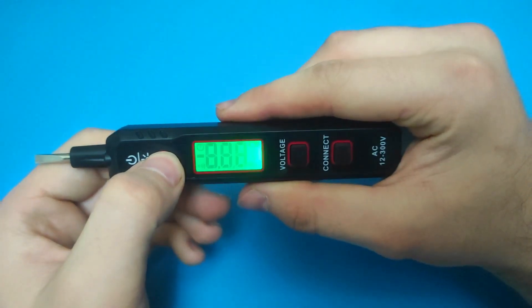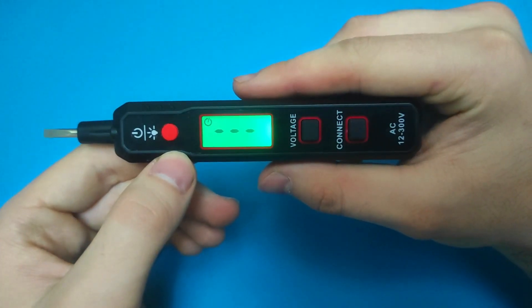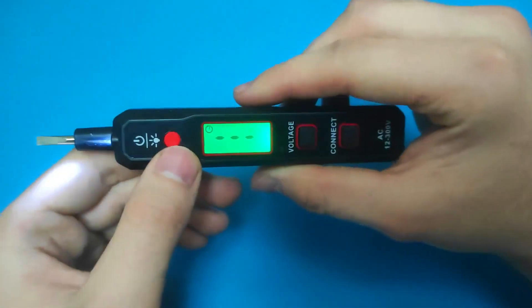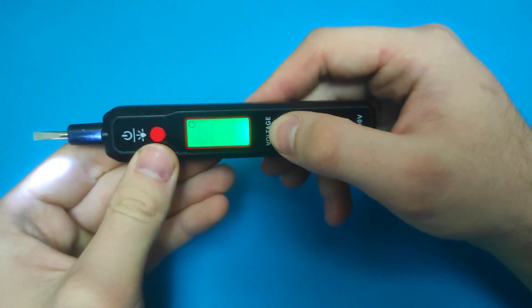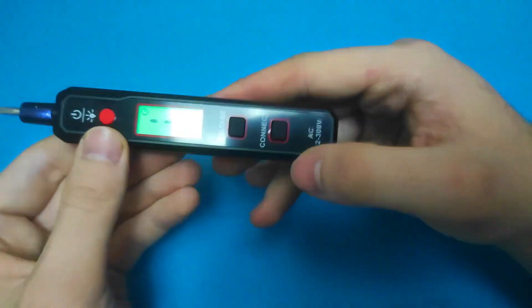The VT500 has a simple two-button operation and the LED display clearly indicates the presence of voltage. The detector also has a built-in flashlight for use in low light conditions. First button is for voltage test and second for polarity test.